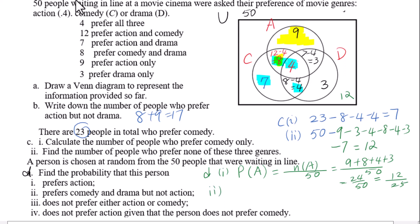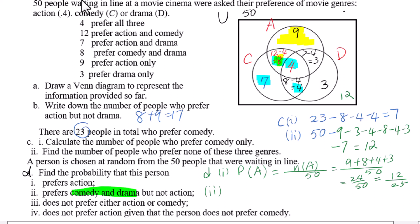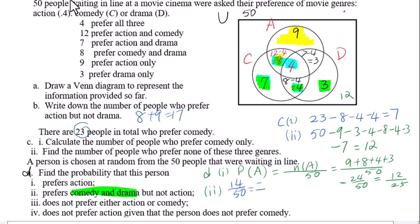For part d2, find the probability that this person prefers comedy and drama but not action. That region's value gives us 4 over 50, which equals 7 over 25.